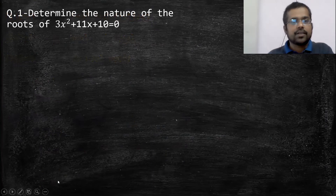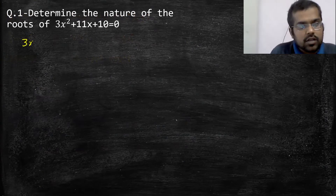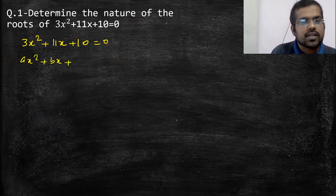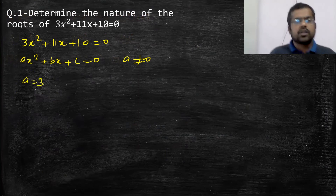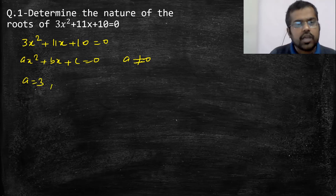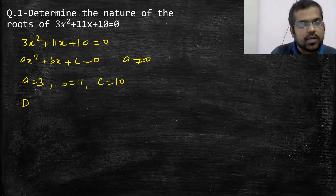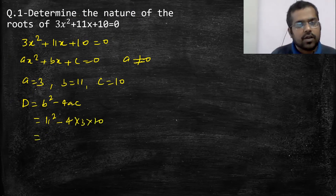Questions देखते हैं — determine the nature of roots। पहला example: 3x² + 11x + 10 = 0। Standard form ax² + bx + c = 0 से compare करते हैं, provided a ≠ 0। तो a = 3, b = 11, c = 10। अब discriminant d = b² - 4ac = 11² - 4(3)(10) = 121 - 120 = 1।